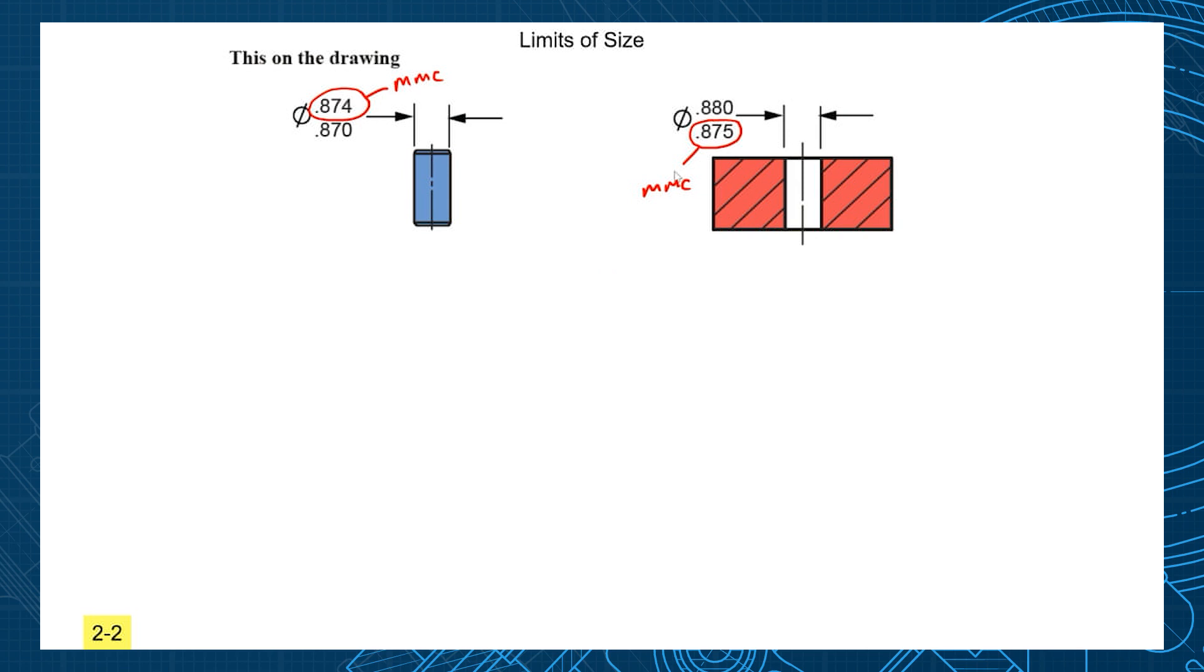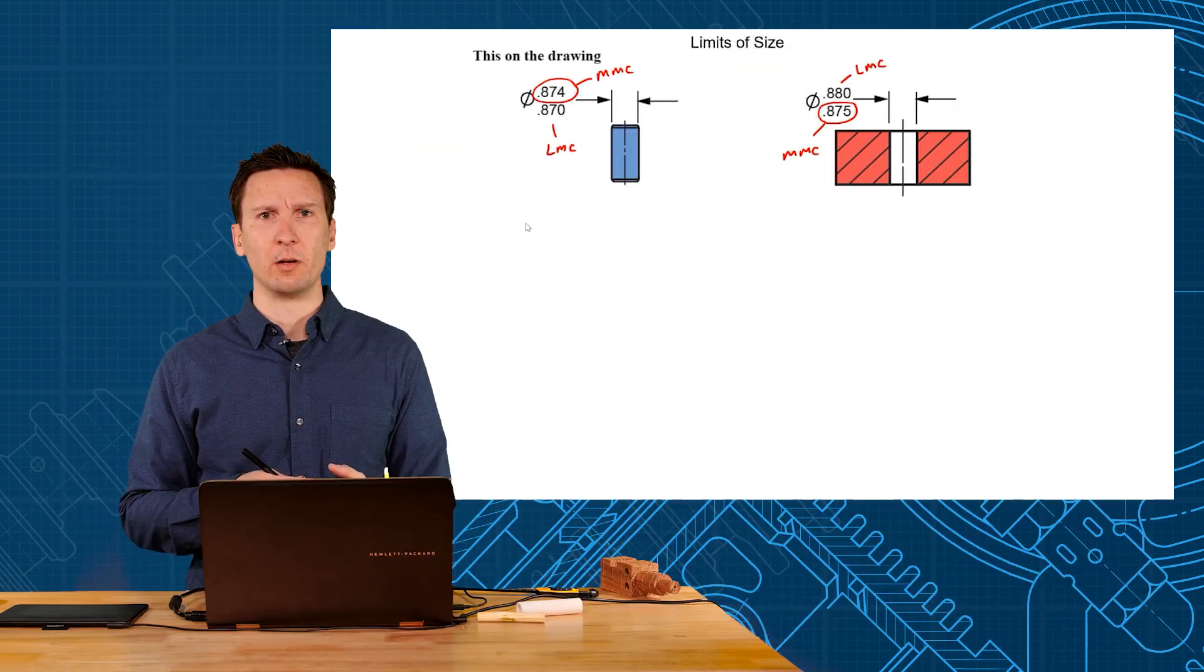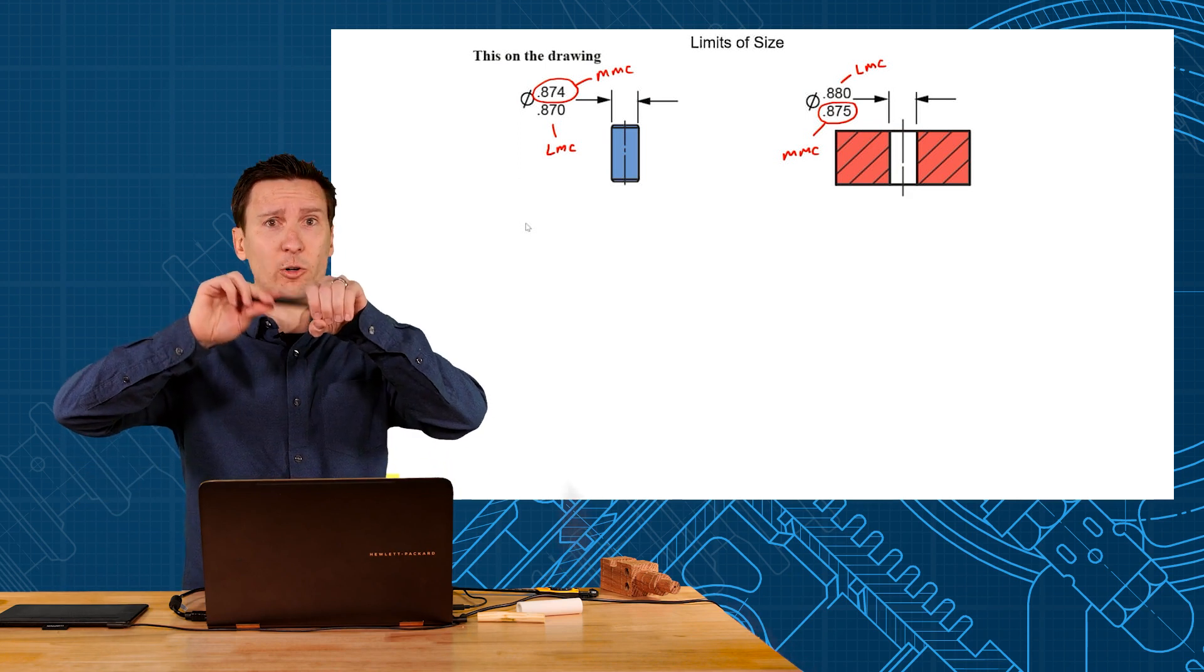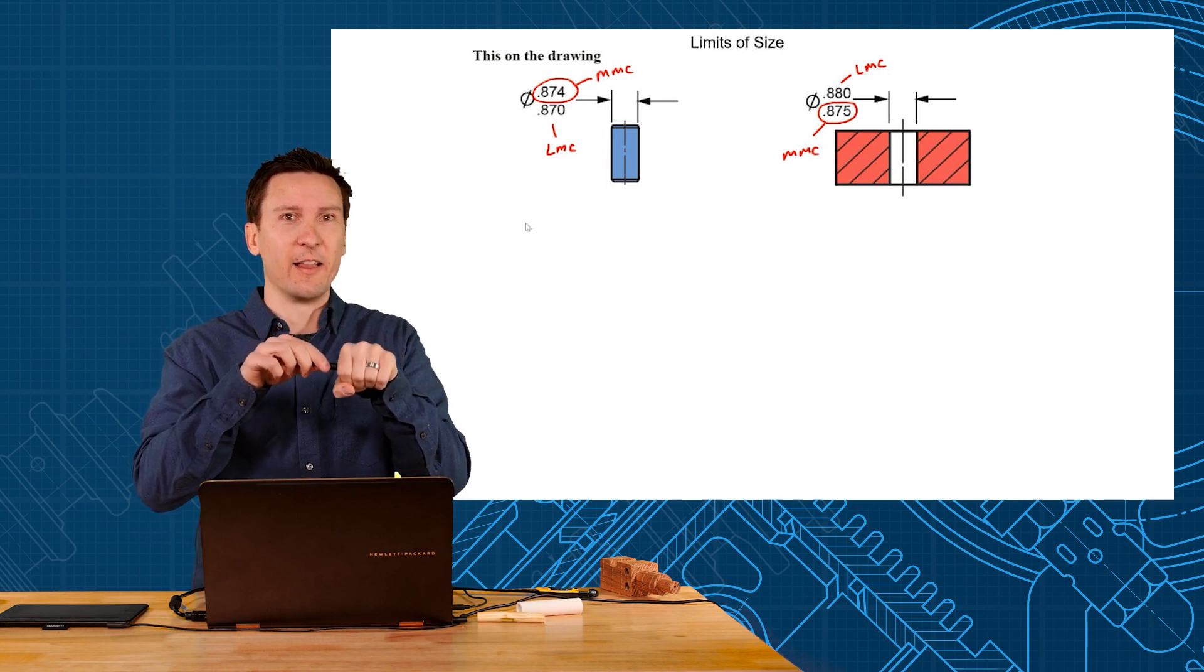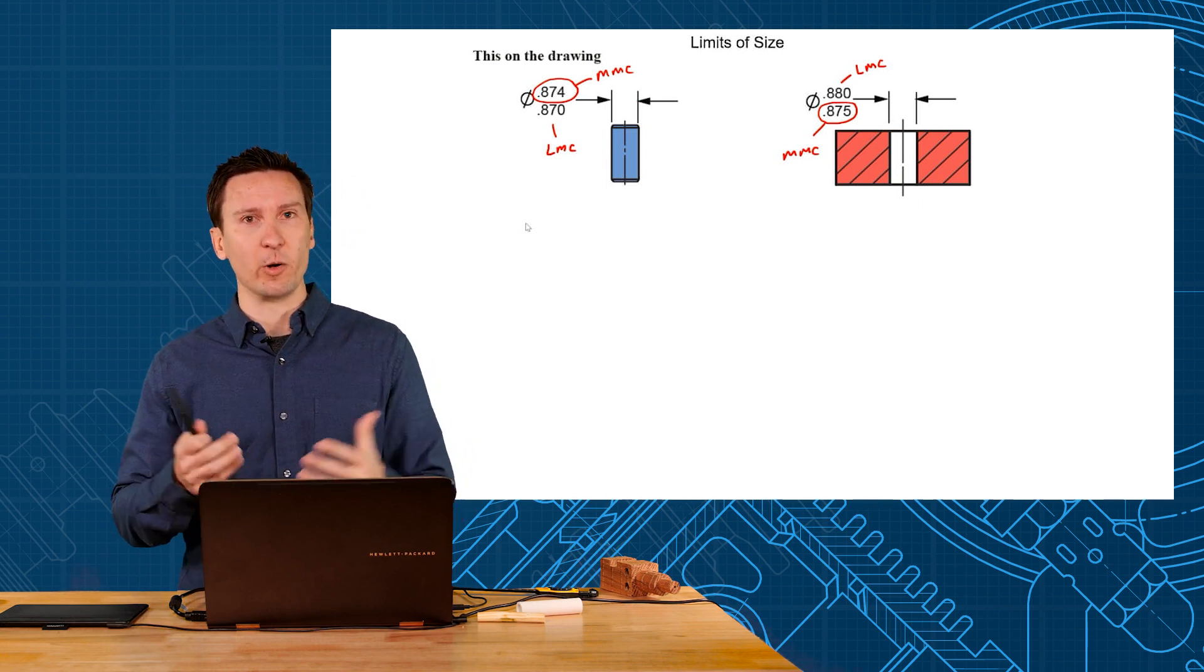Now the other numbers that we didn't circle would be what we call the LMC - biggest hole and smallest pin. Why would somebody care about the biggest hole and smallest pin? Well, that's going to be the maximum rattle you could have between the pieces. Every fit has two sides: first, they go together - that's MMC minus MMC. The other is LMC minus LMC, and that's how much rattle or slop you could have between pieces.